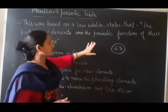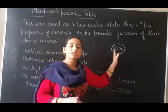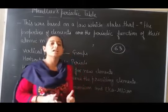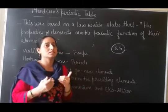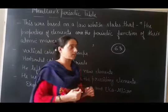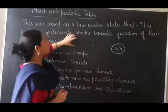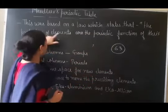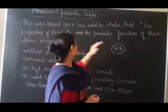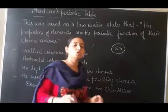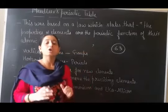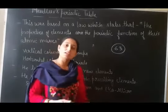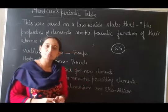At that time, 63 elements had been discovered and needed to be arranged so that we could easily understand and classify them. The Mendeleev table is basically based on the law that the properties of elements are the periodic function of their atomic masses. The arrangement is done in order of increasing atomic mass.